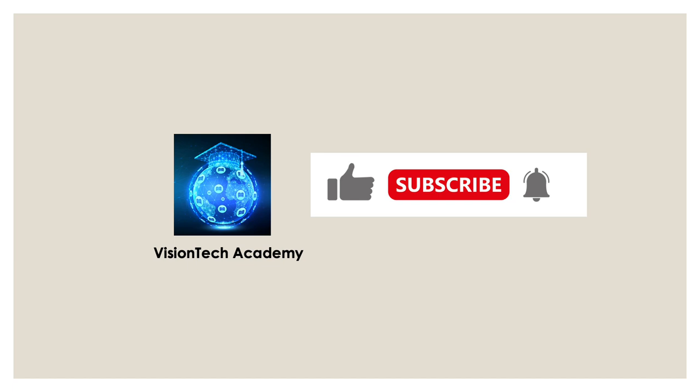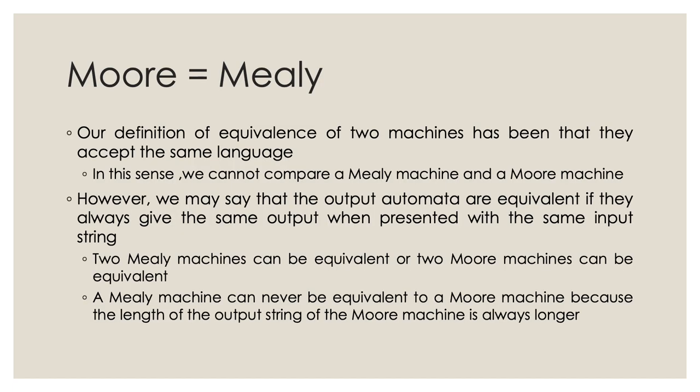If you are new to our channel, please subscribe — it's called Vision Tech Academy — like our videos and click the bell button to receive newly released videos right away. So the big question here: we saw what the Mealy machine does, we saw what the Moore machine does. Both of them are finite automata with output. The big question is the notion of equivalence — are they equivalent?